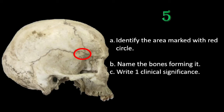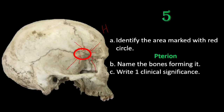The next question is: identify the area marked with the red circle, name the bones forming it, and write one clinical significance. This region is referred to as the pterion. The pterion is formed by four bones that make an H-shaped suture: the anterior inferior angle of the parietal bone, the squamous part of the temporal bone, the frontal bone, and the greater wing of the sphenoid bone. These four bones form the H-shaped suture known as the pterion.